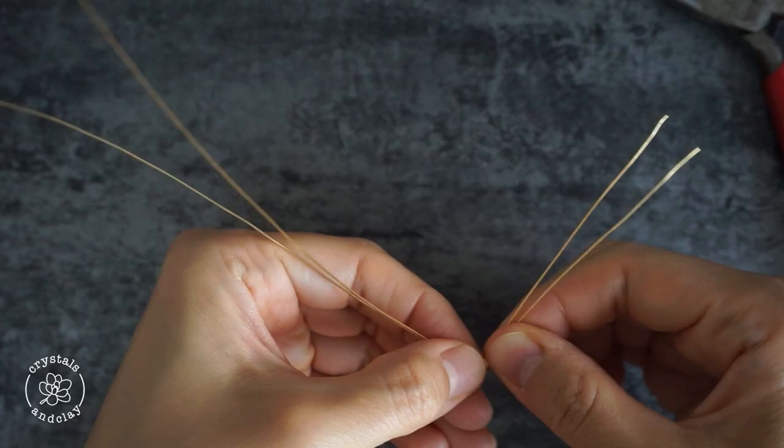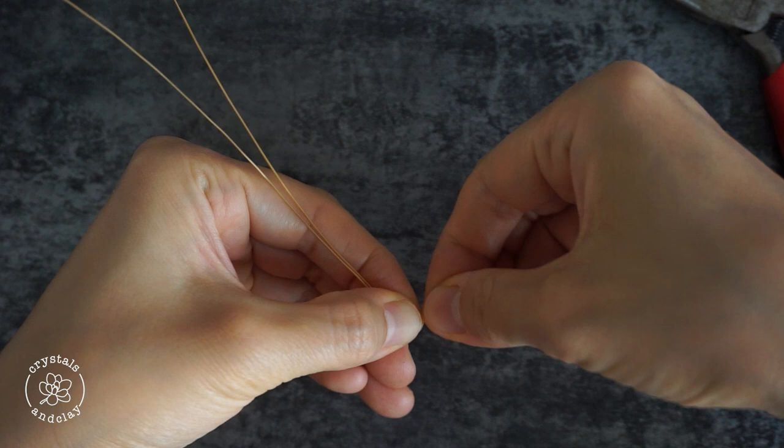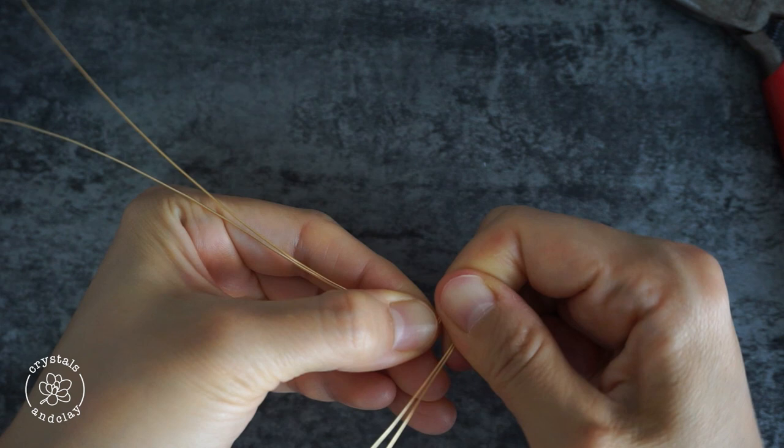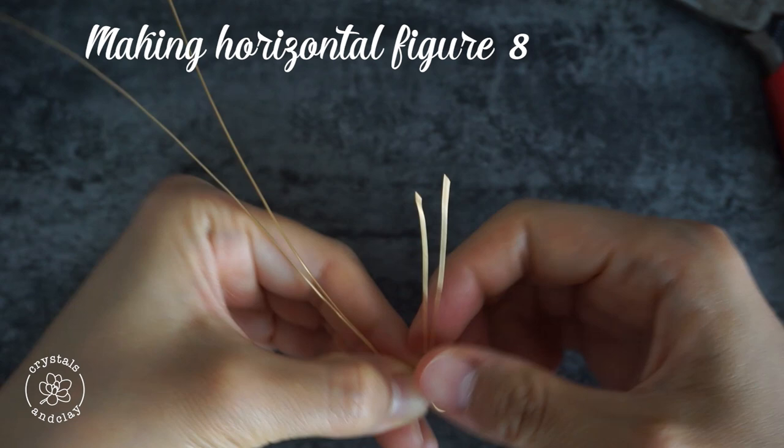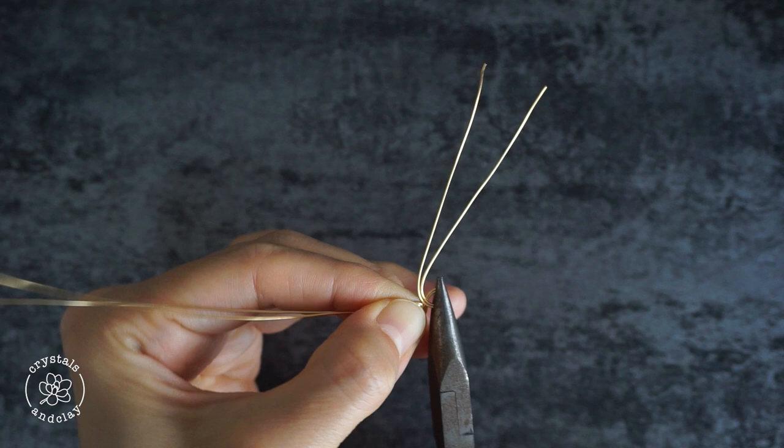Right next to the first loop, we are going to curl the wire again and make the second loop. If you are wondering about the direction of the wire, imagine you are making a horizontal figure 8. Try to keep the second loop about the same size as the first one.